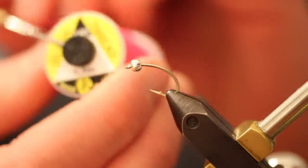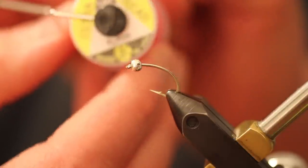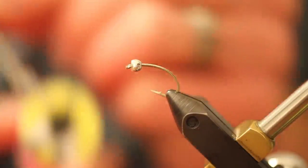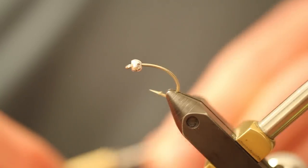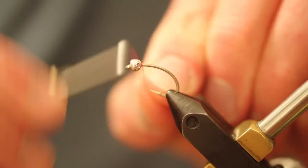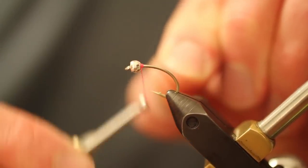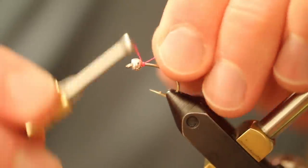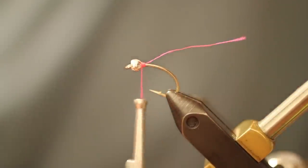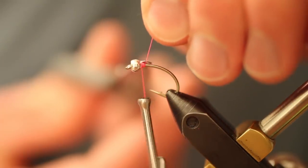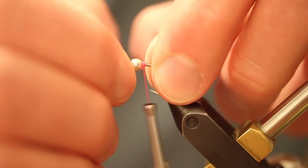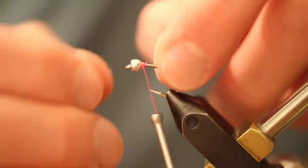Next thing we're going to do is we're going to use UTC 140. Now this bead has to be locked into place. This is a fluorescent pink thread and we're going to use it to lock this bead in. This bead is the anchor point for our material that we're going to be putting on top of it. If the bead slides, the material will slide as well and this fly is going to be garbage at that point. We don't want that. So we're going to go behind the bead. We're going to build up some thread and we're going to make it a nice, pretty tight thread bunch there.